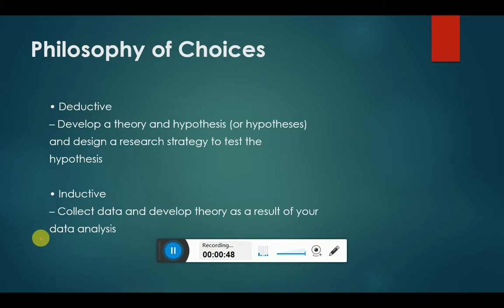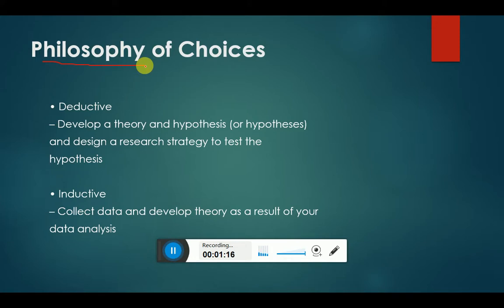Now let's start from the first topic: the philosophy of choices. Before starting the topic, let me explain the idea. Philosophy of choices simply means what are the different ways a researcher can make a conclusion. Results can be concluded with the help of two methods: one is known as the deductive approach and one is known as the inductive approach.